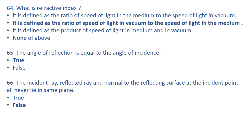The refractive index is defined as the ratio of the speed of light in vacuum to the speed of light in the medium — option B is correct. The angle of reflection is equal to the angle of incidence — this is true. When light is incident on a reflecting surface, the angle of incidence always equals the angle of reflection.